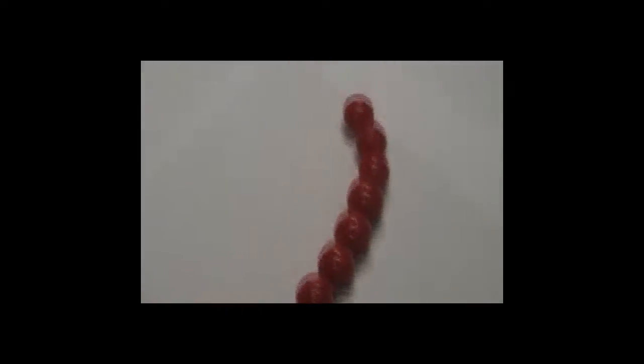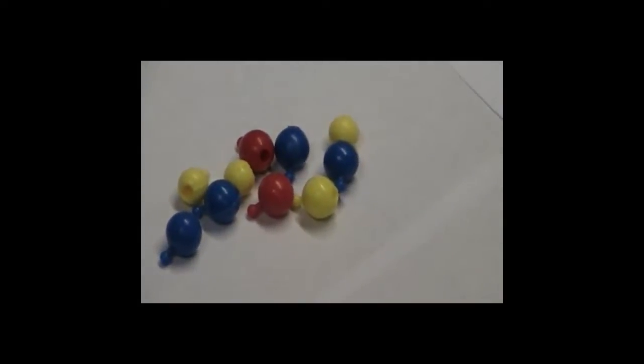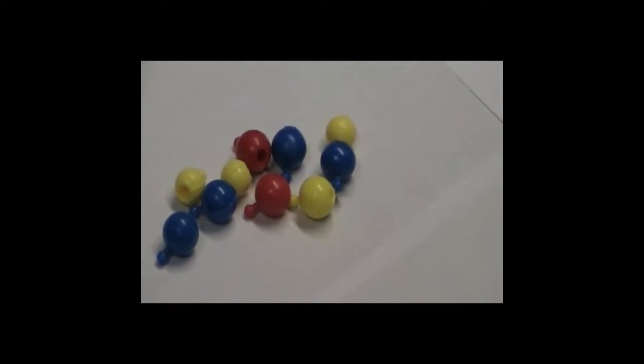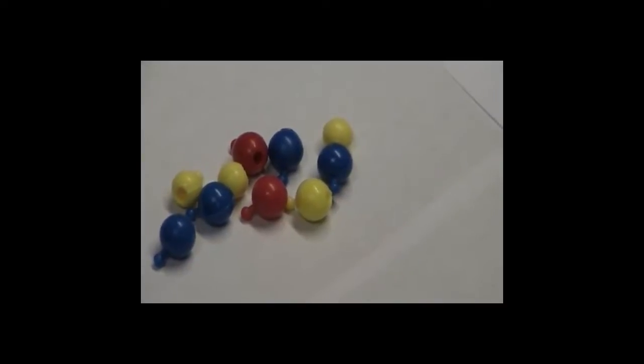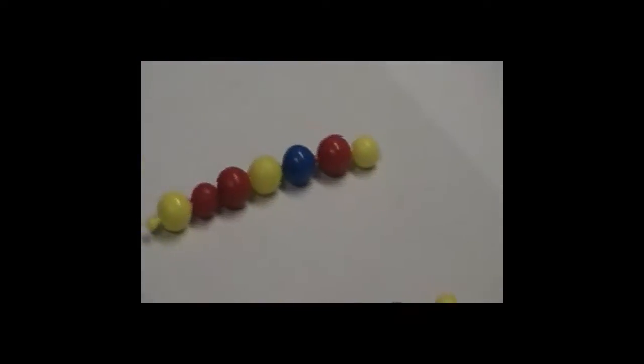They can all be the same monomer as in this chain. For example, starch is a long chain of glucose monomers. Or the monomers can all be different, like in proteins and nucleic acids. Nucleic acids are made up of four different nucleotide monomers, whereas proteins are made up of up to 20 different amino acid monomers.